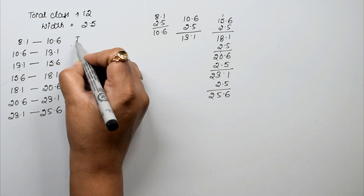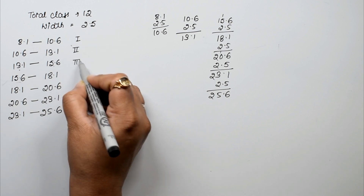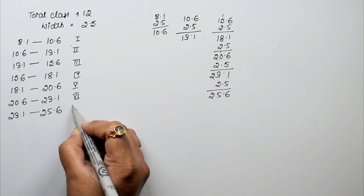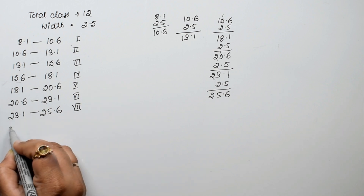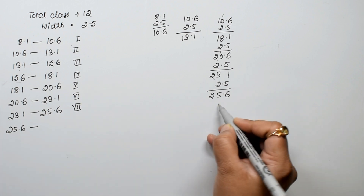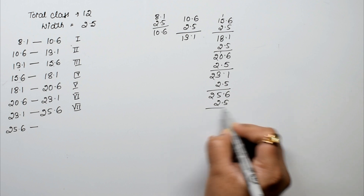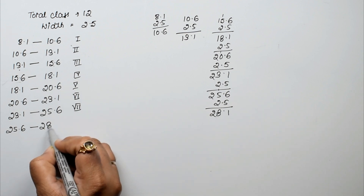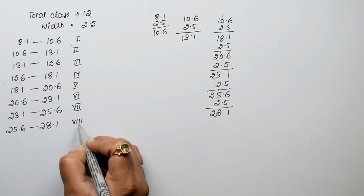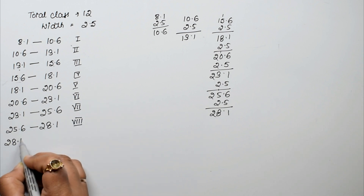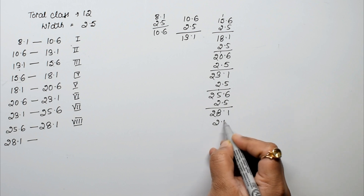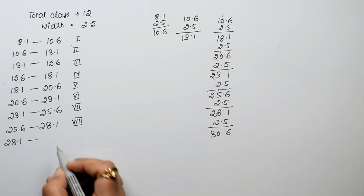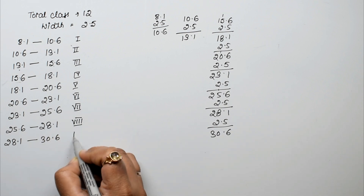Class 1 through 7 are now established. From 25.6, add 2.5 to get 28.1 — this is the 8th class. Then 28.1 + 2.5 = 30.6, which is our 9th class boundary.